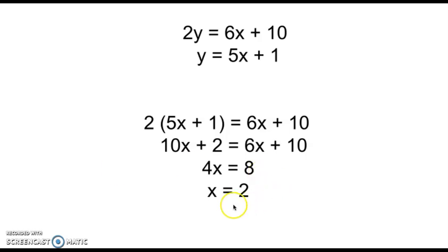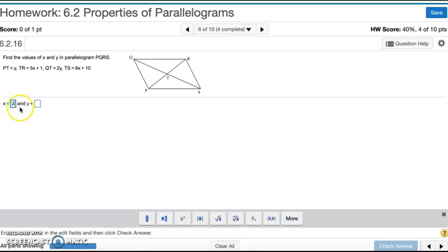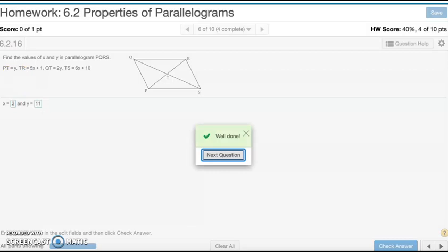Now to find Y, I put 2 inside for X here since it's solved for Y. So 5 times 2 is 10 plus 1 is 11. So Y is 11 and X is 2. That's number six.